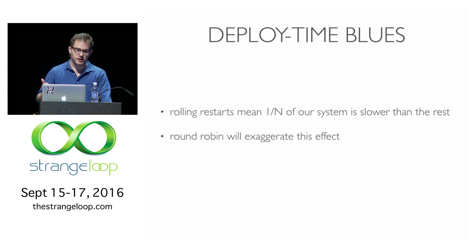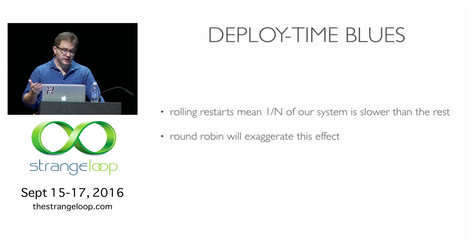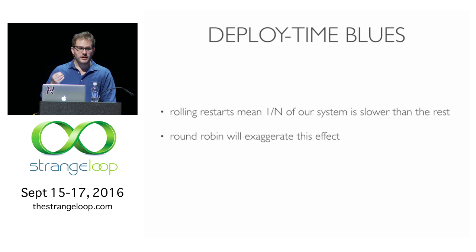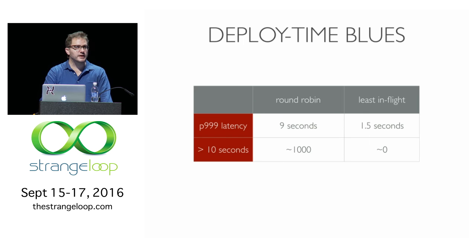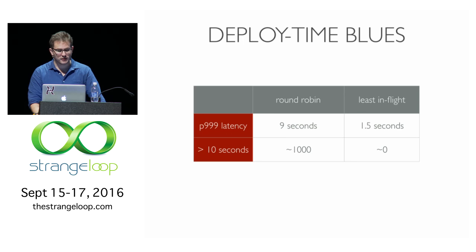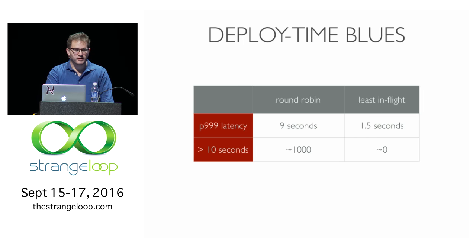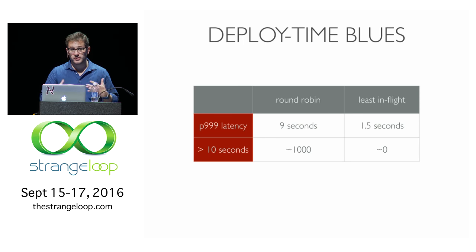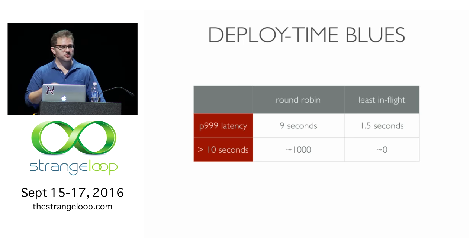To concretely talk about the impact: we have an issue with our deploys, especially in Java land where when you restart the server, it's slow — caches are cold, it has to JIT. The round-robin approach is exactly the opposite of what we want because we keep throwing more and more traffic at it. With round-robin via HAProxy previously, whenever we did deploys our P999 latency — our 99.9th percentile — was nine seconds, and about 1,000 requests over the course of the deploy would actually timeout at greater than 10 seconds. When we moved to least in-flight, it went down to about 1.5 seconds with essentially no timeouts. This is a significant, meaningful change to our customers, and it's exaggerated by the fact that we're looking at the top end of the distribution.